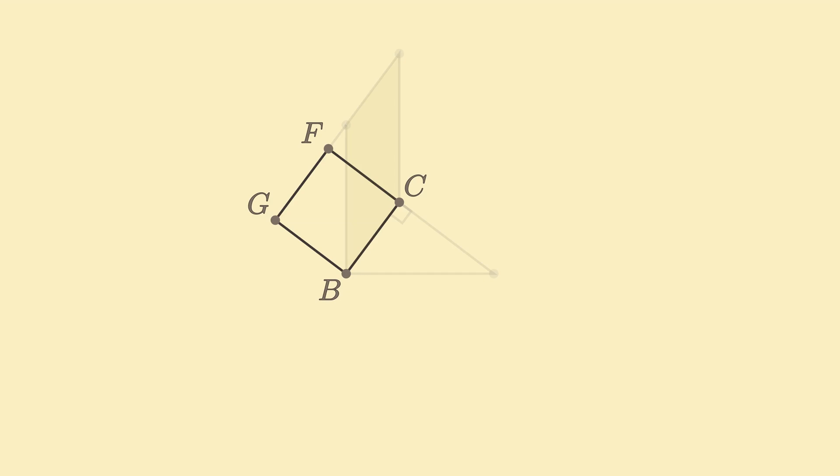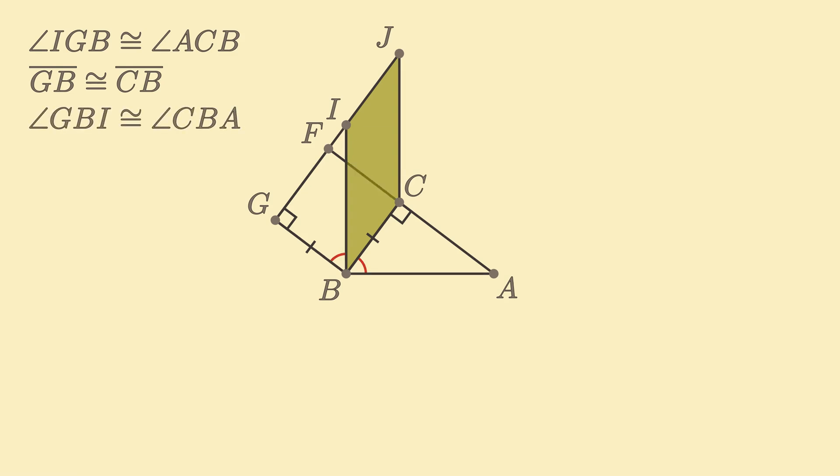First focus on square BCFG. We find that angle FGB is right, and that sides GB and CB are congruent. Then, focusing on the whole figure, we use the fact that right angles GBC and IBA overlap at angle IBC to show that angles GBI and CBA are congruent.